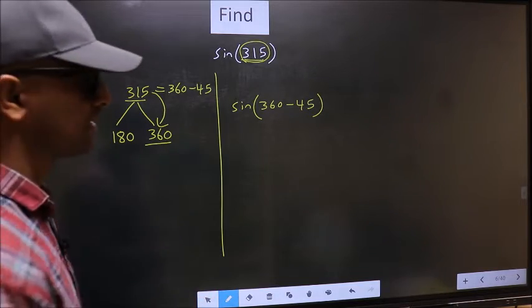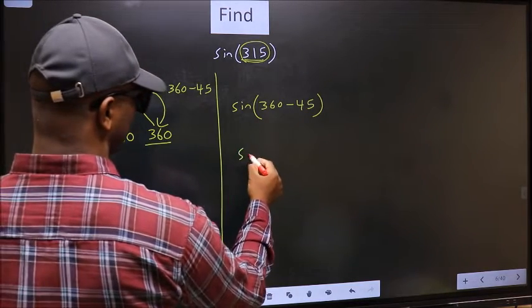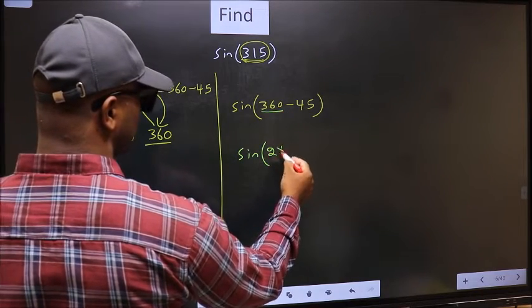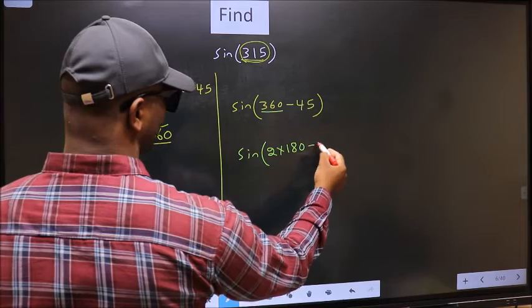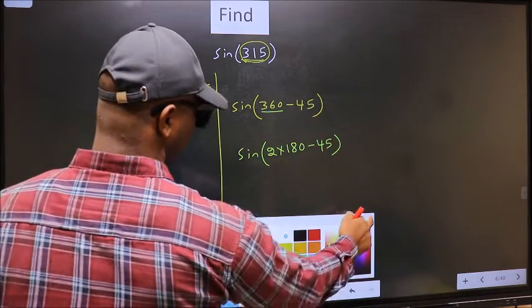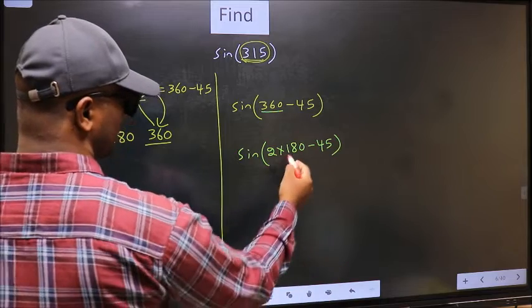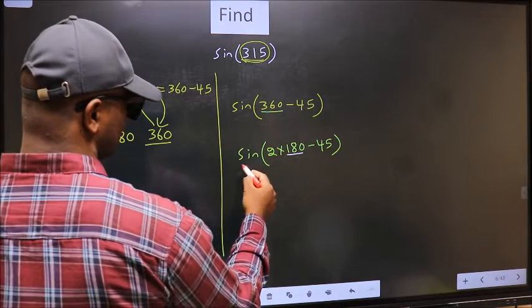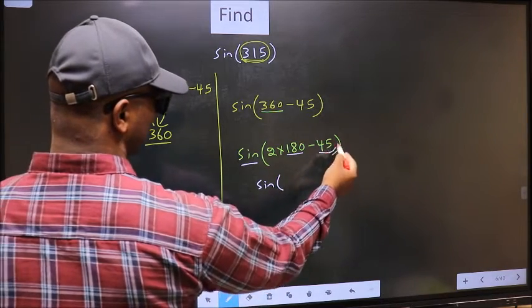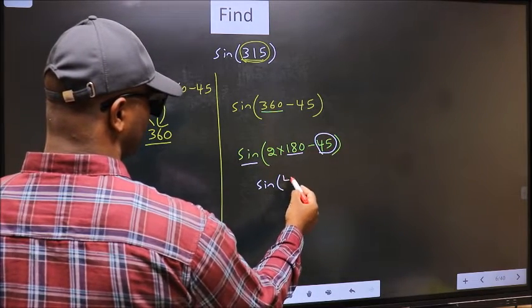Next, sin. In place of 360, we should write 2 times 180 minus 45. Here we have 180, so sin is not going to change. It will remain sin, and inside we get this angle 45.